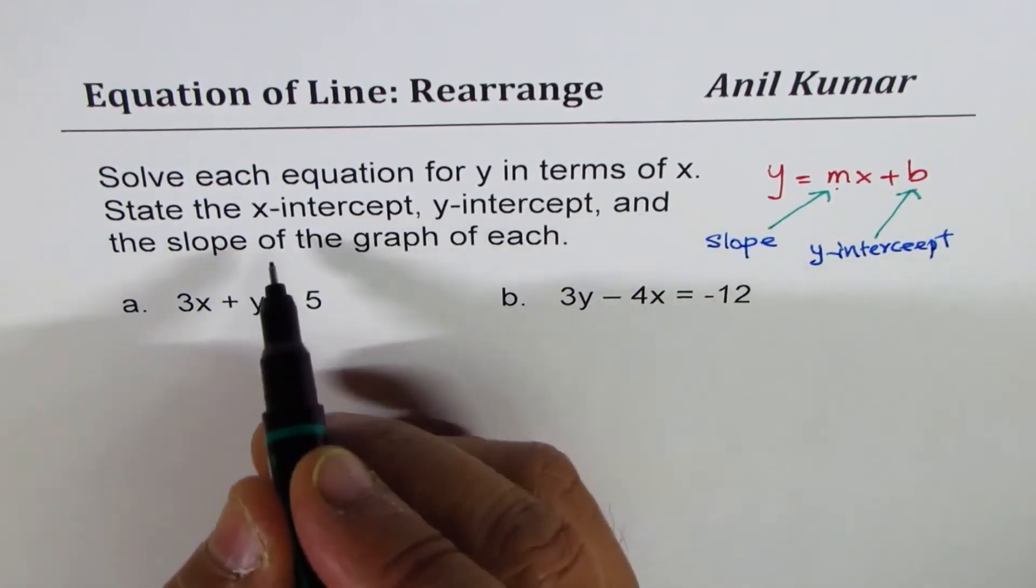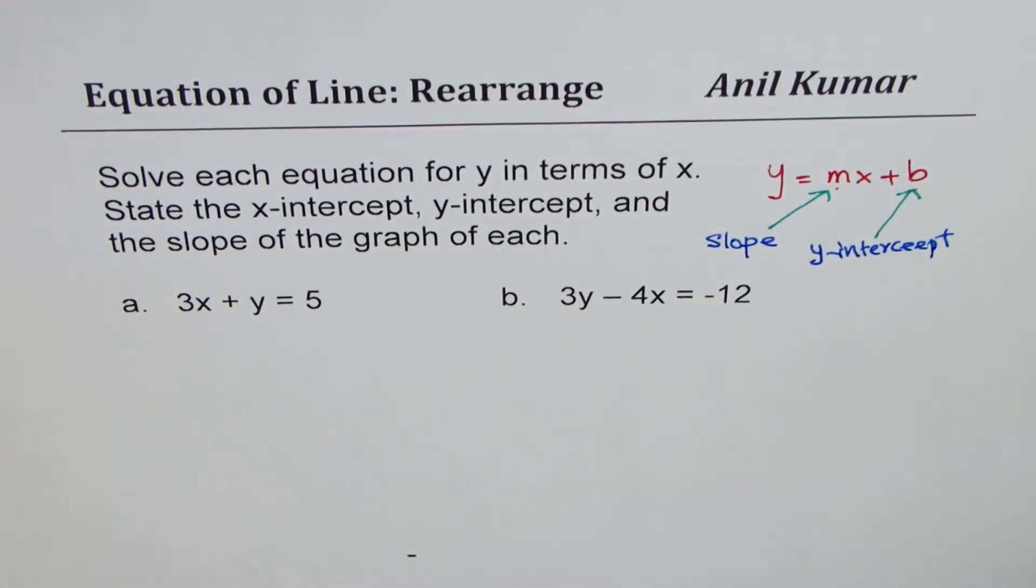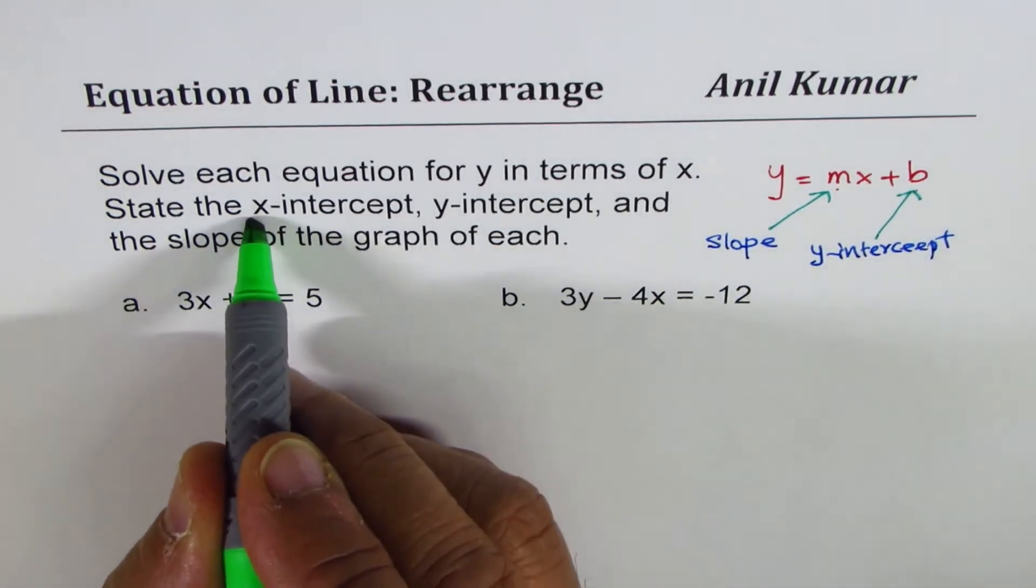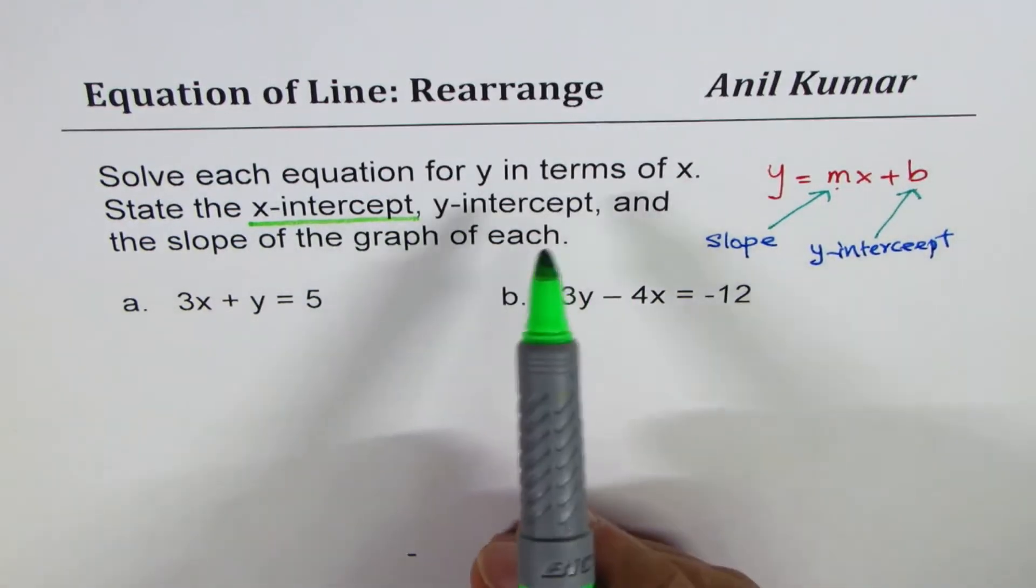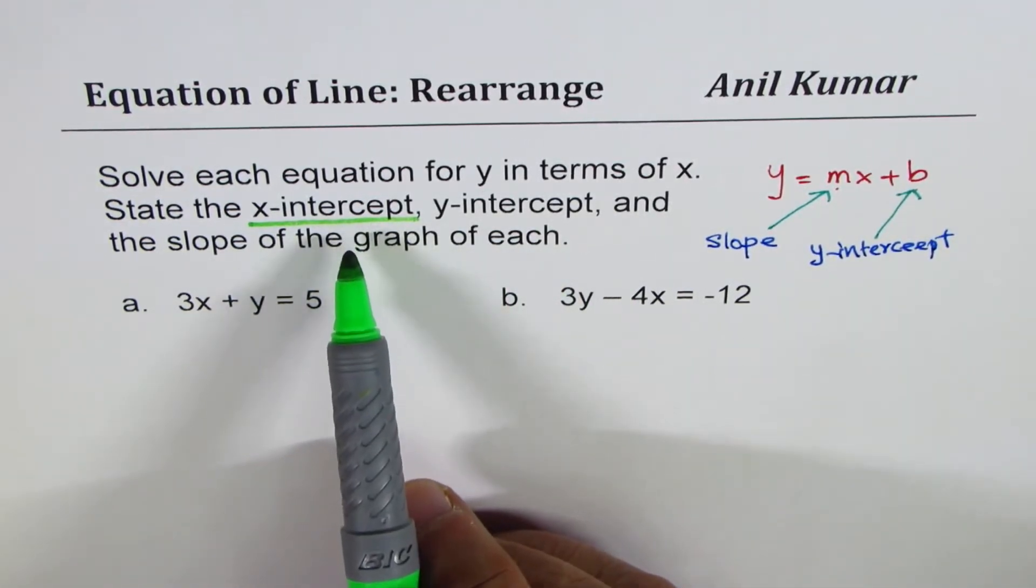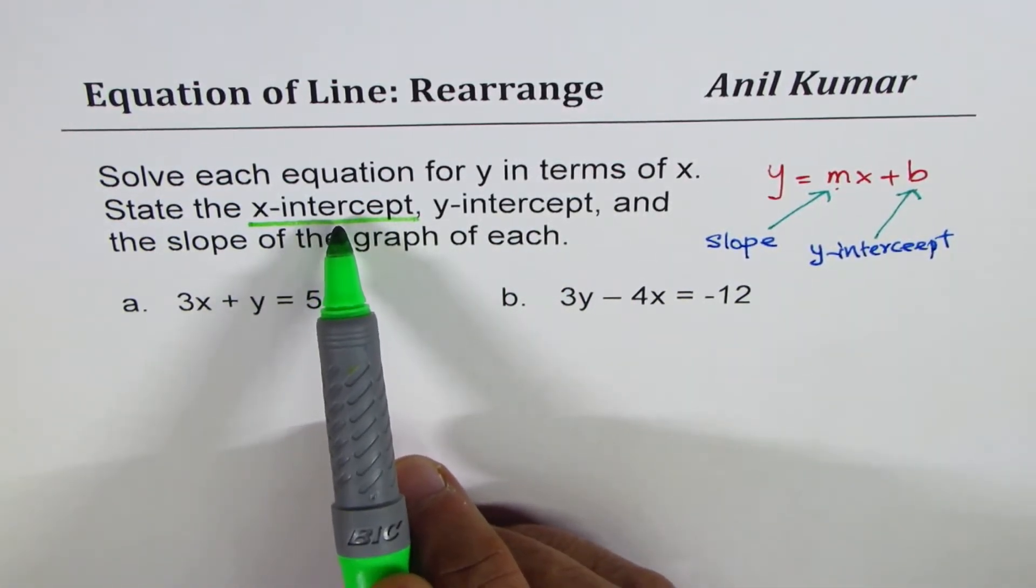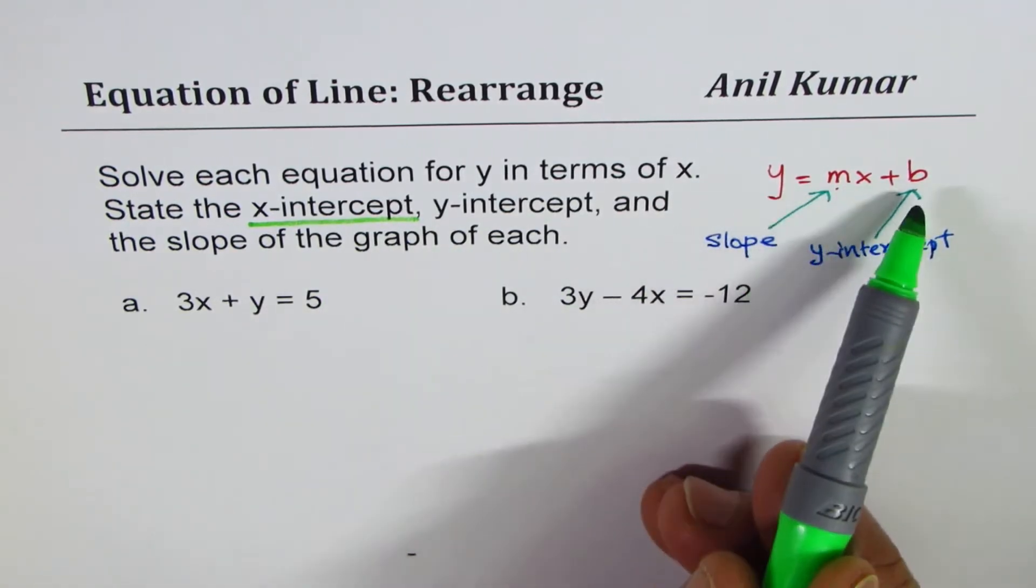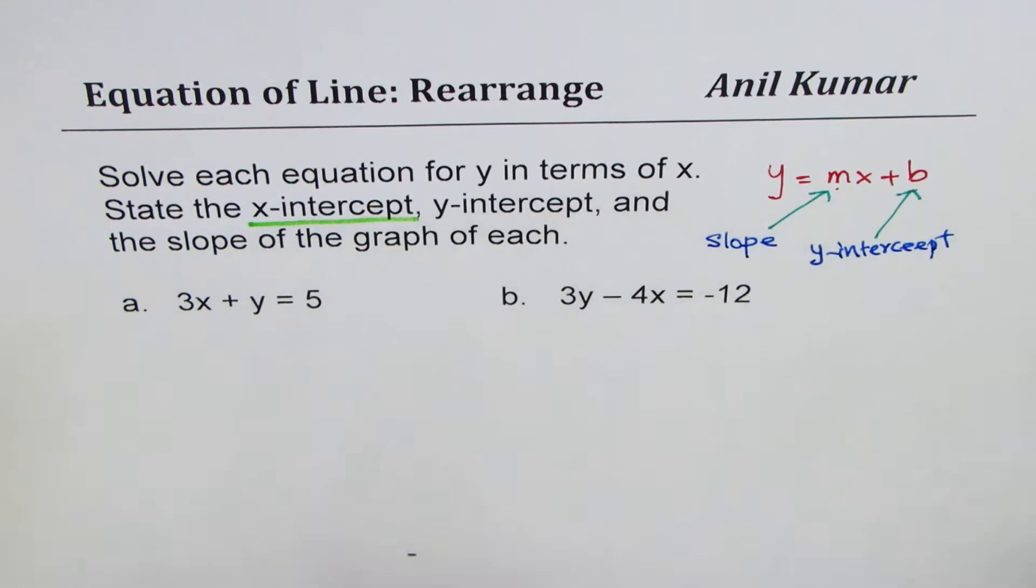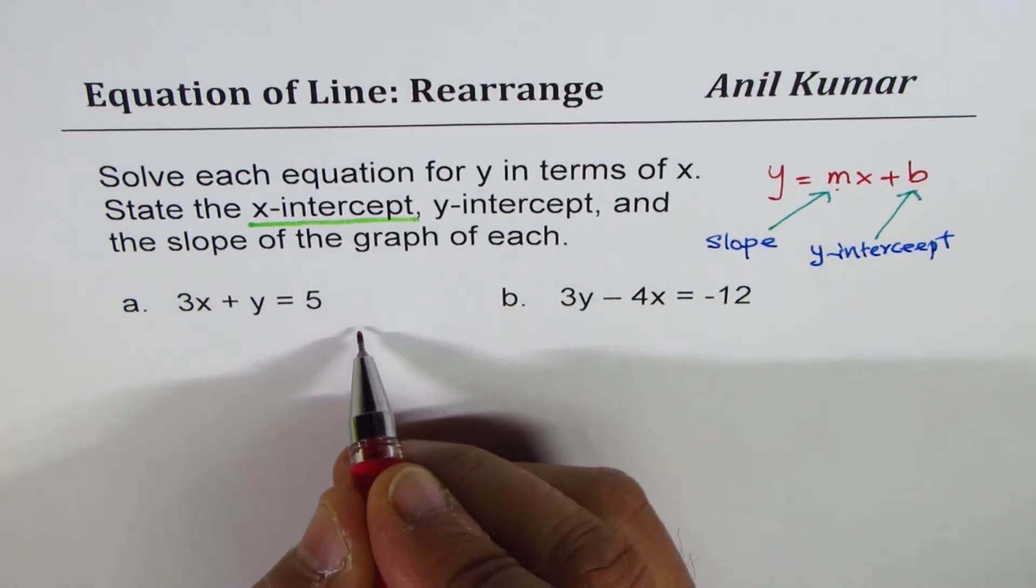But we need to state x-intercept also. We need to get x-intercept also. So what we are going to do here is, we will first find x-intercept, then solve and write down slope and y-intercept. So that is going to be the concept. So let us begin with x-intercept.